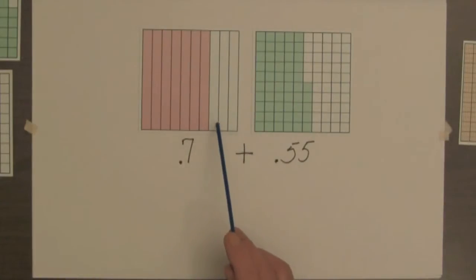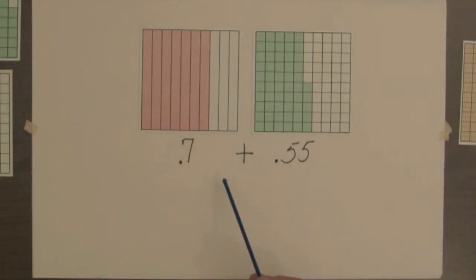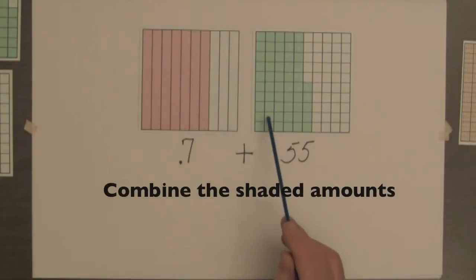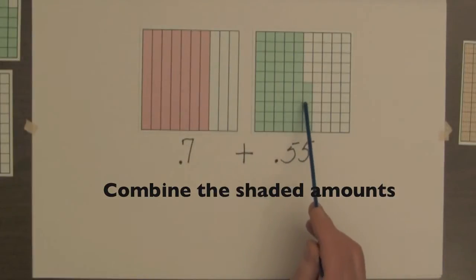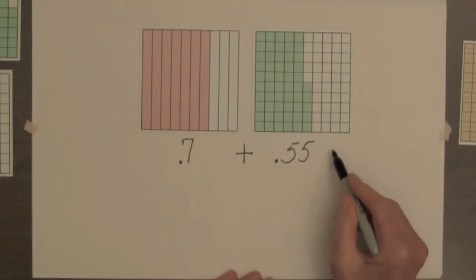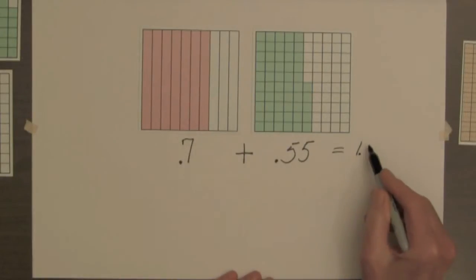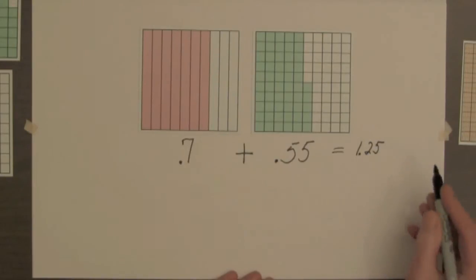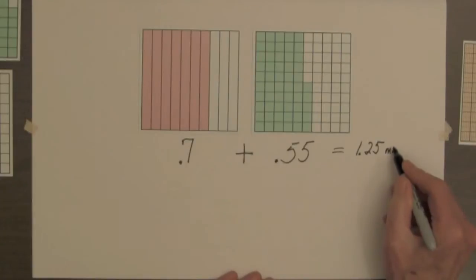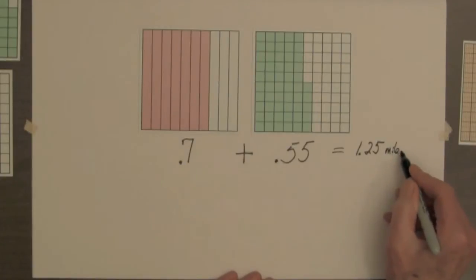Now this square needs three more columns — three more tenths — to form one mile. So we can take three columns from this square, and then we'd have twenty-five left. So the total round-trip distance would be one whole square and twenty-five parts out of a hundred, or one point twenty-five miles.